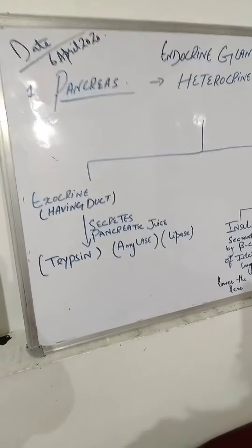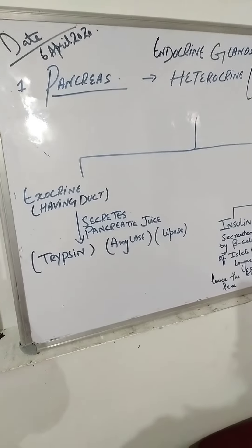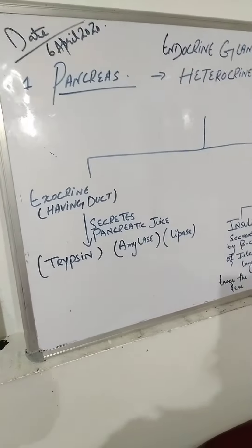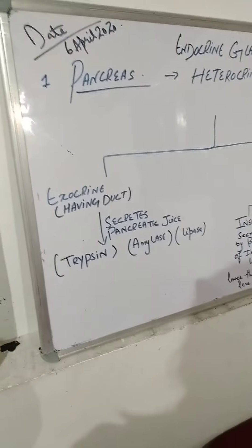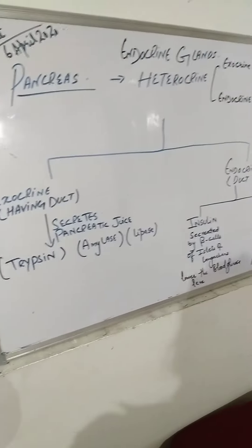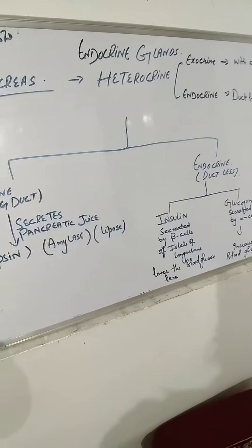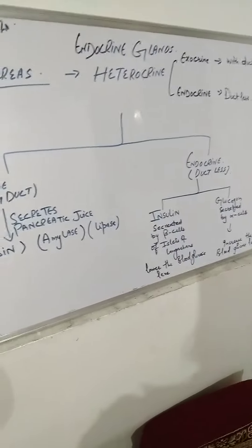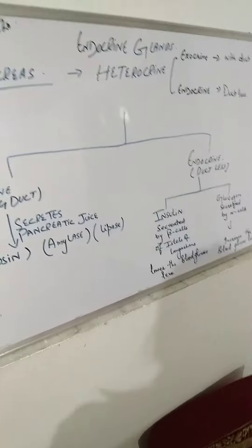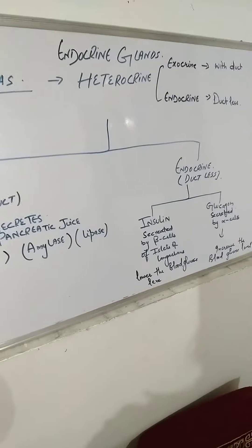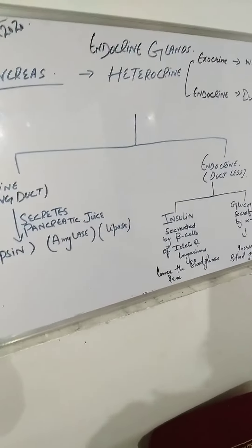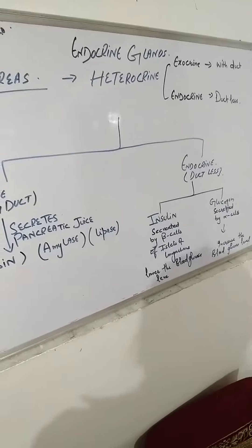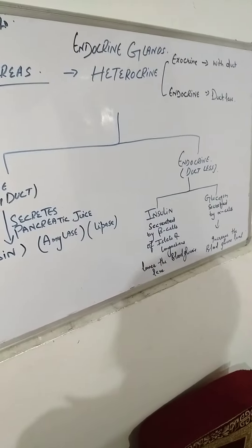The pancreas is a gland. It is present in the duodenal part of the small intestine. It is a heterocrine gland. Heterocrine means it has both exocrine and endocrine parts.